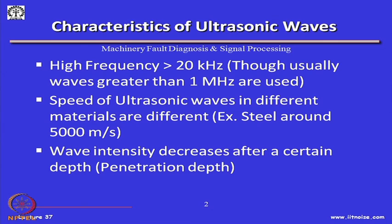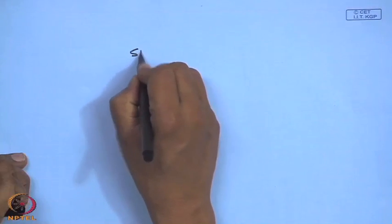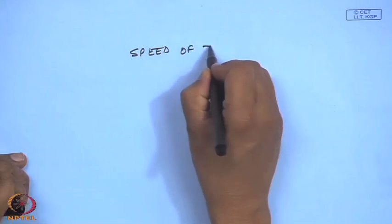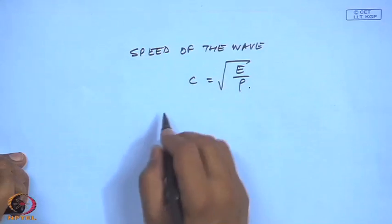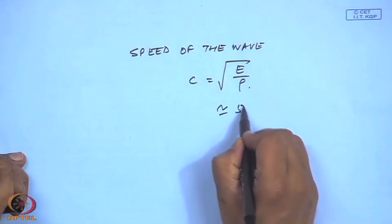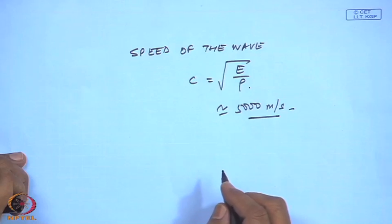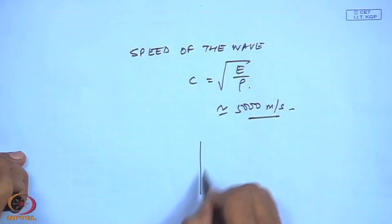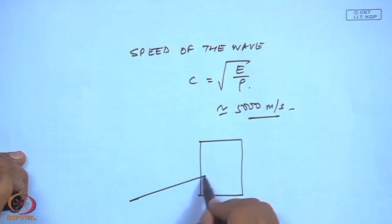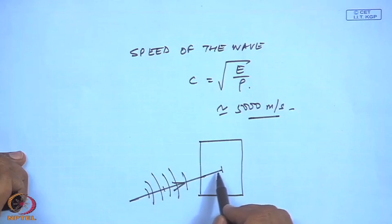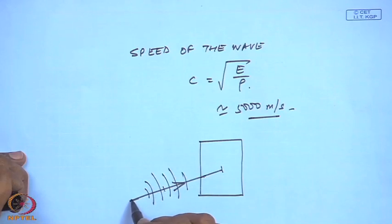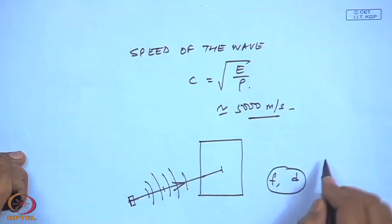Another important principle of ultrasonic waves is that the speed of the wave is dependent on the material property. For example, in steel the speed of sound is about 5000 meters per second. One needs to know the different speeds of ultrasonic sound waves in a material. Once a wave is incident, there is a certain depth to which it can go, depending on the power of the ultrasonic wave, the frequency, and the diameter of the wave — and this is what is used in transducer design.